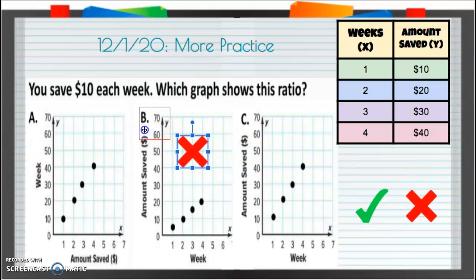You can X off B if you'd like. So these two look like they're the same. Over 1, up 10, yes. Over 2, up 20, yes and yes. Over 3, up 30, yes and yes.